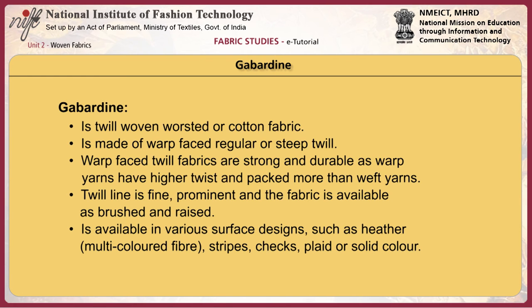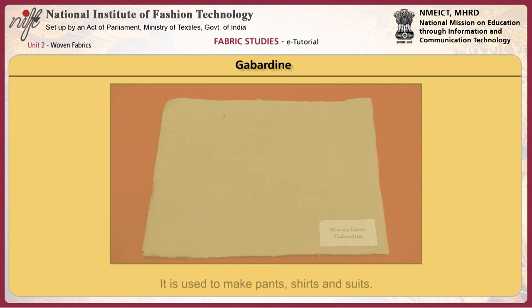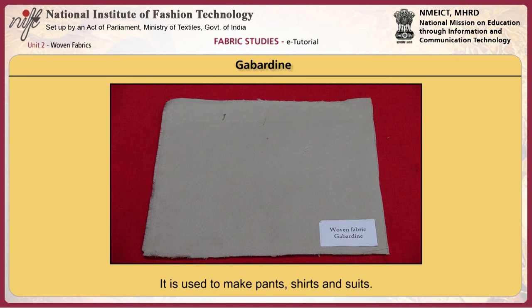Gabardine is a twill woven worsted or cotton fabric made of warp-faced regular or steep twill. Warp-faced twill fabrics are strong and durable, as warp yarns have higher twists and are packed more than weft yarns. The twill line is fine and prominent, and the fabric is available as brushed and raised. It is available in various surface designs such as multicolour fibre, stripes, checks, plaid or solid colour. Since the fabric is durable, gabardine is widely used in making pants, shirting and suiting.